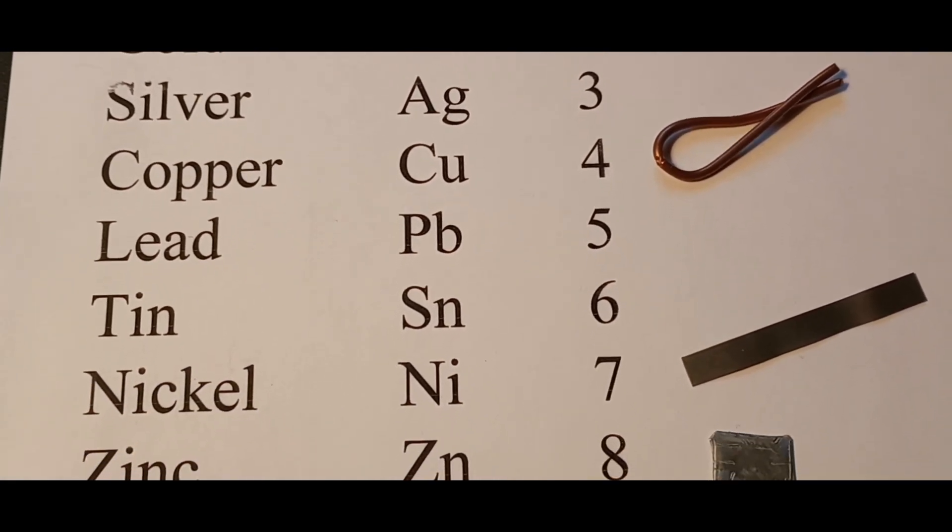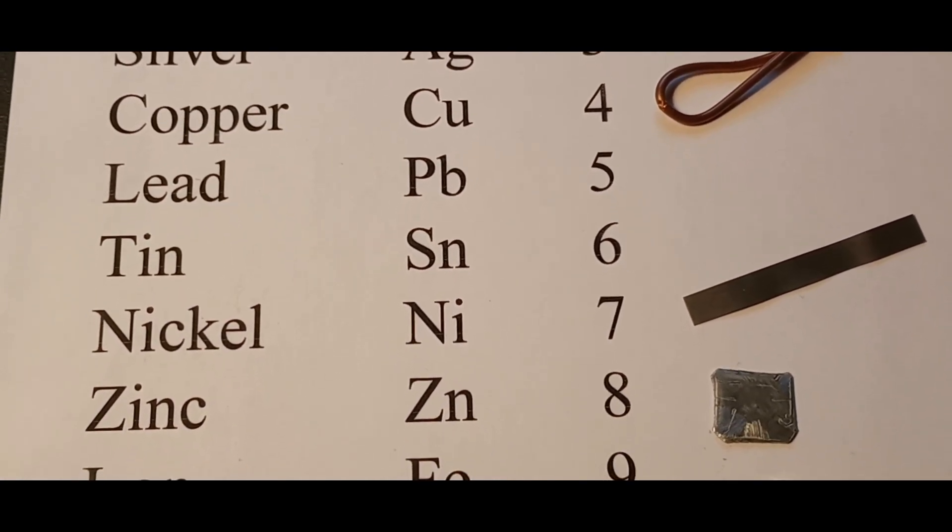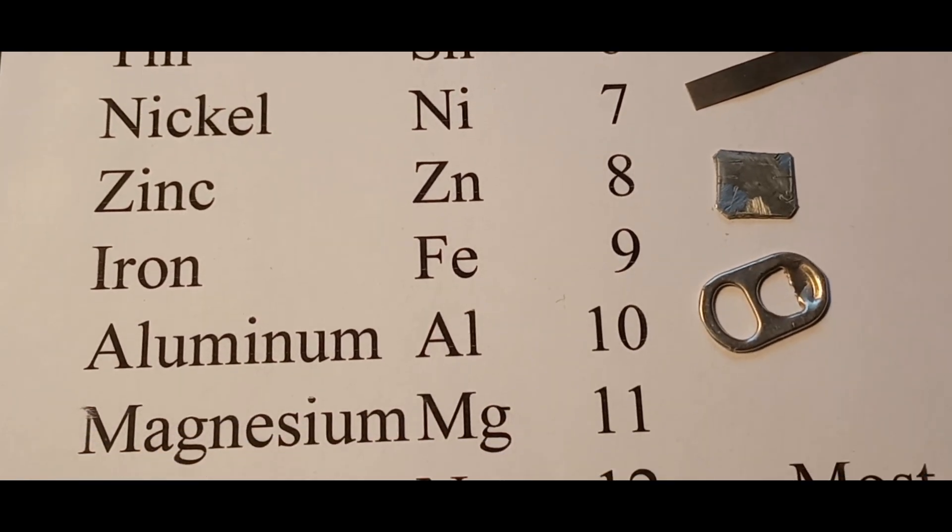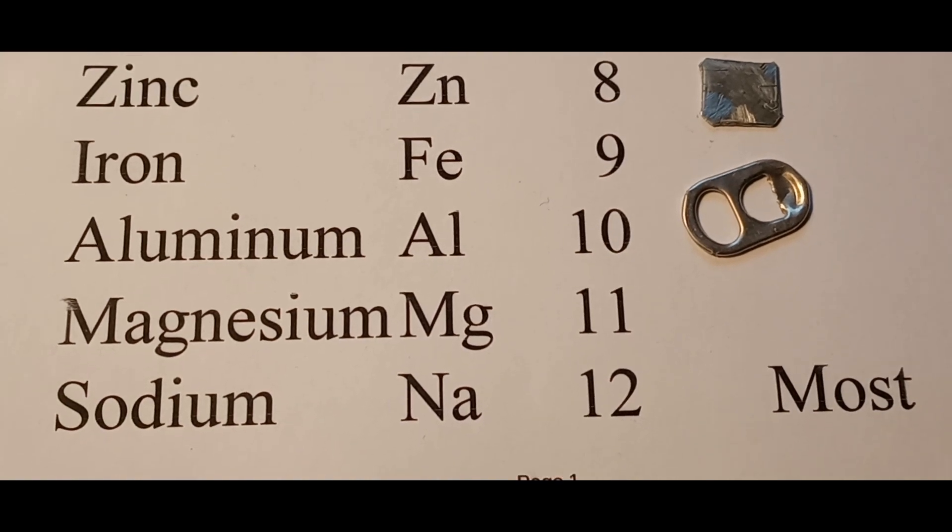You'll see copper comes in at number four, then nickel at seven, zinc at eight, and then aluminum at ten. That's the basis for using zinc to try to displace these two higher metals.